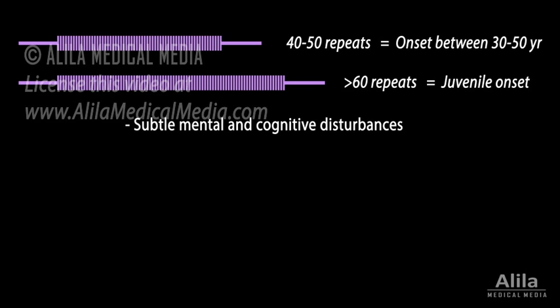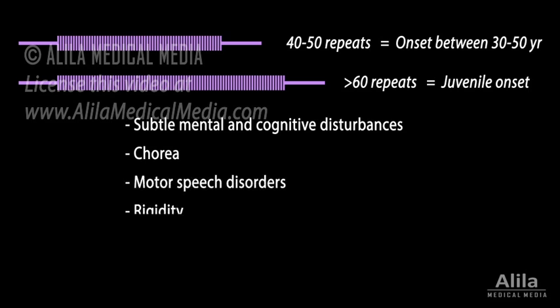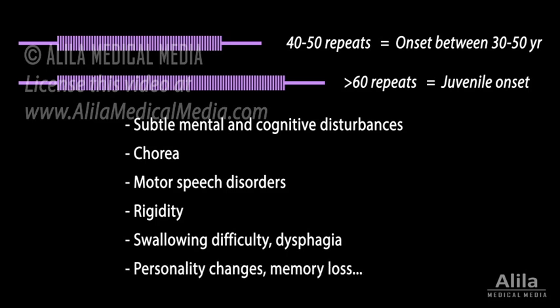As the disease progresses, chorea becomes prominent, followed by motor speech disorders, rigidity, swallowing difficulty, dysphagia, personality changes, memory loss, and other cognitive and psychiatric impairments.